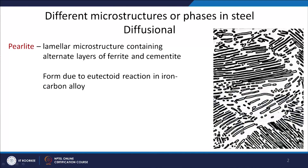Before going to TTT and CCT curves, let's recap some phases and microstructures we will find in steel. One category is diffusional transformation — that is, the phase change takes place because of the diffusion of atoms.